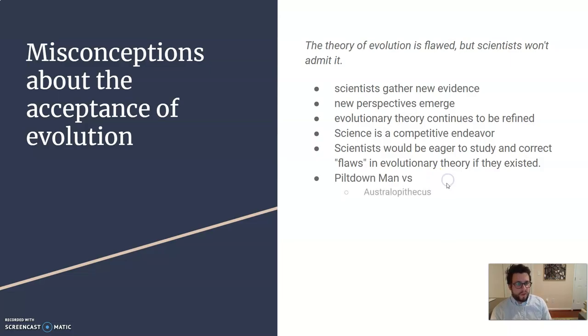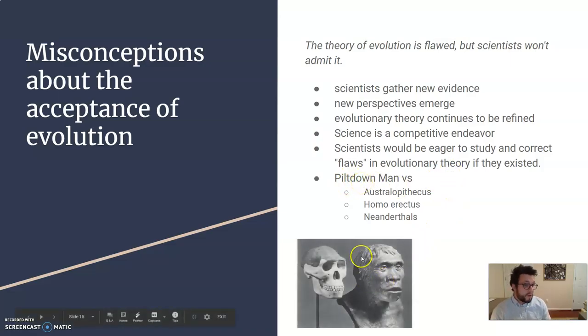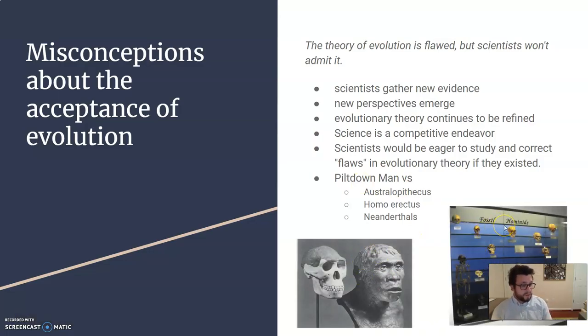So, for example, the Piltdown Man was a fossil of a human-like species that was considered to be a missing link. Well, it turns out it was a hoax. Now, there are many different human-like fossils that we can find and compare to humans that, as far as we know, aren't hoaxes. And we have since had to adjust our knowledge in evolutionary theory to exclude this Piltdown Man over time. So, as we learn more, we change and try to make it better fit what we do know.